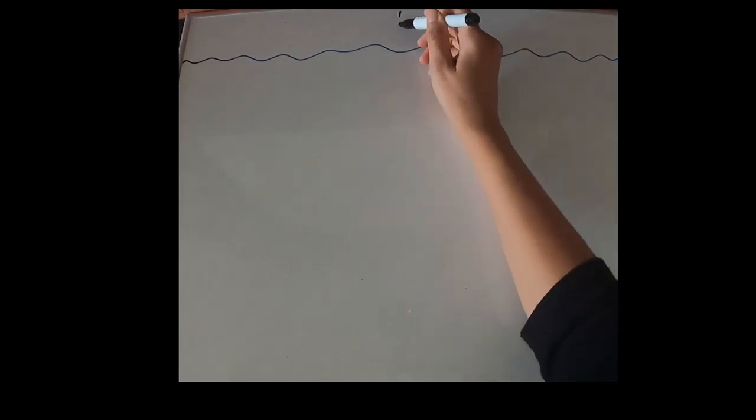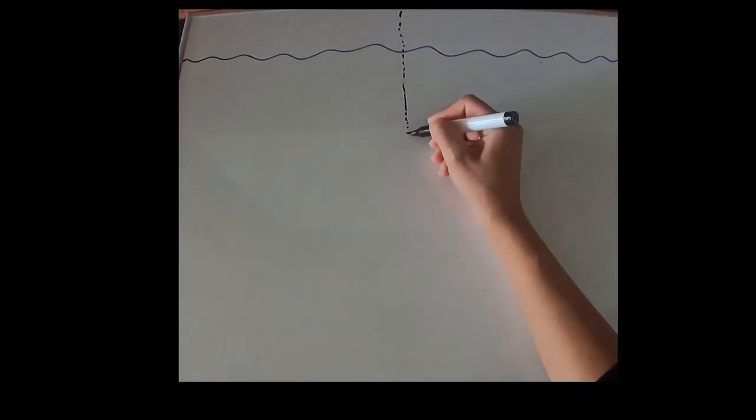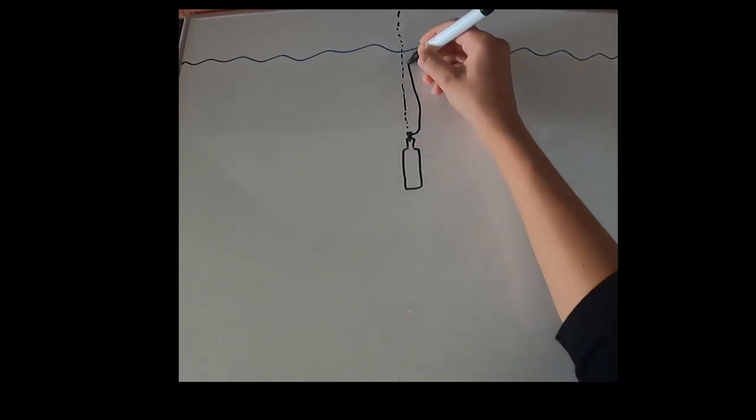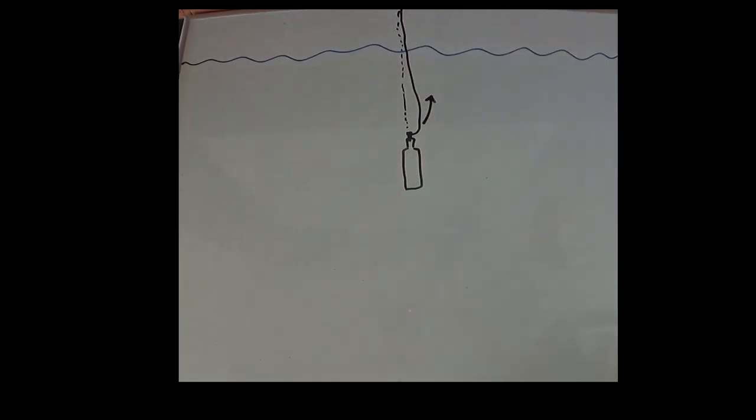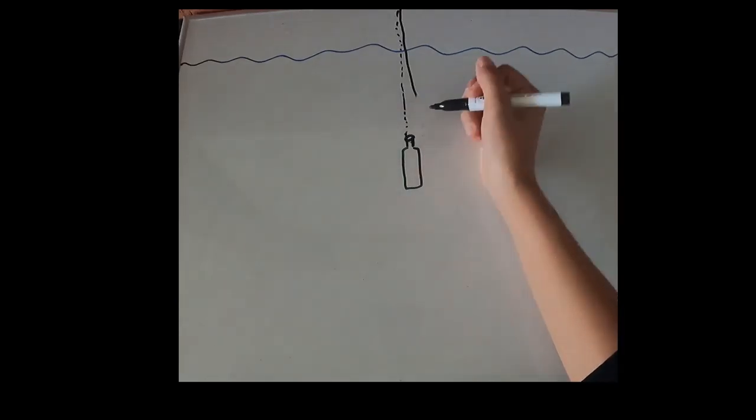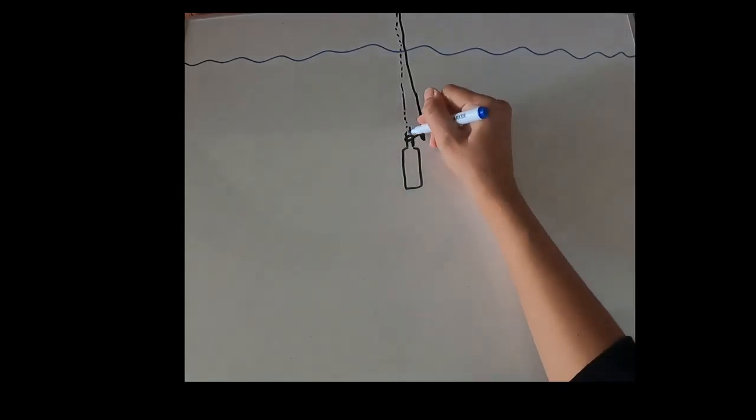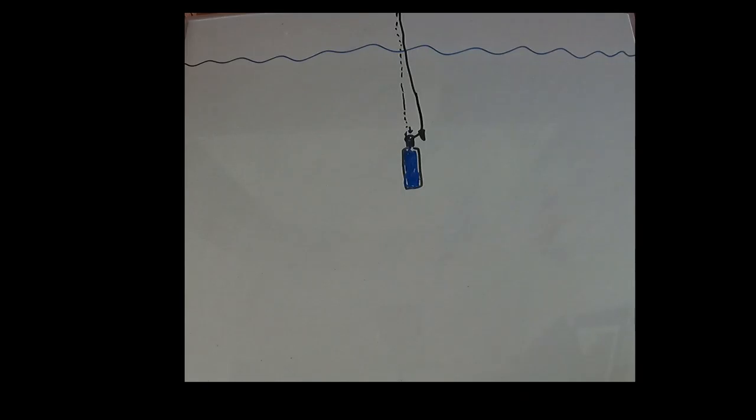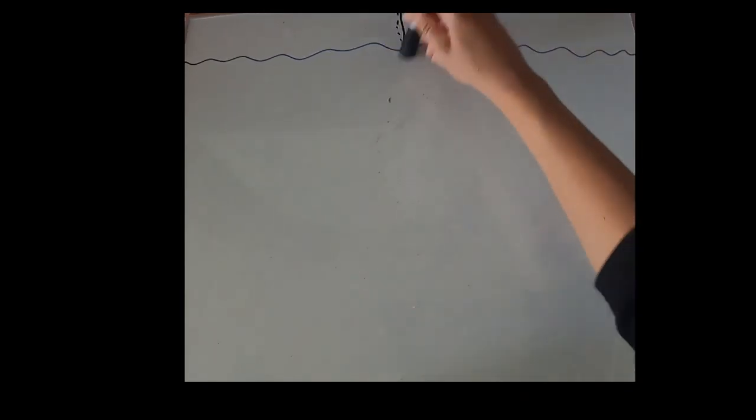Alternatively, people use weighted bottles to sample at specific depths. A weighted glass bottle is fitted with a cork that is attached to a line that extends to the surface. The bottle is lowered to the desired depth, and the cork is then yanked out so that the bottle fills with the water from that given depth. The bottle is then pulled back to the surface.